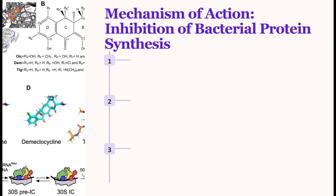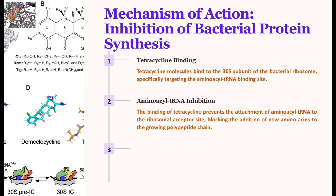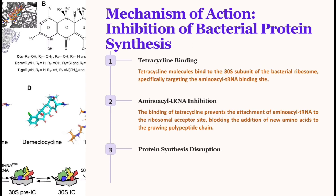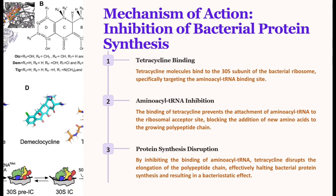The mechanism of action is a three-step process. First, tetracycline binds to the 30S ribosomal subunit, specifically targeting the aminoacyl-tRNA binding site. Second, aminoacyl-tRNA inhibition occurs — because attachment to the ribosomal acceptor site is blocked, aminoacyl-tRNA is inhibited, and the polypeptide chain elongation is blocked. Third, protein synthesis disruption: since acyl-tRNA binding is disrupted by tetracycline, the polypeptide chain is broken, disrupting bacterial protein synthesis and producing the bacteriostatic effect.